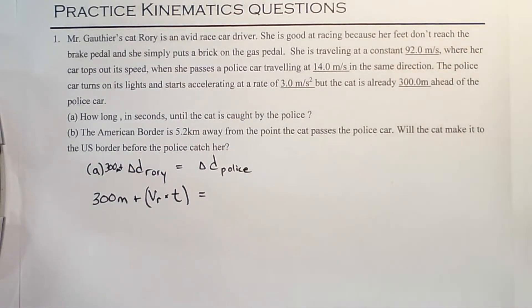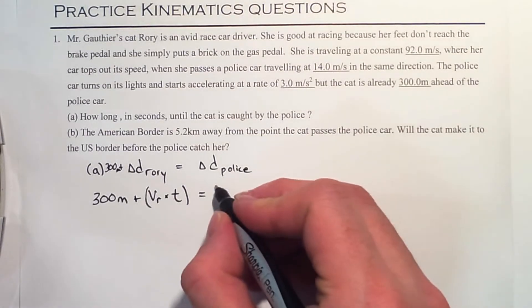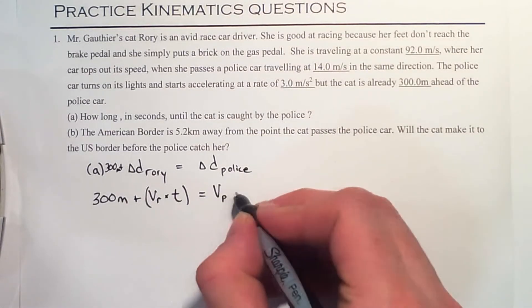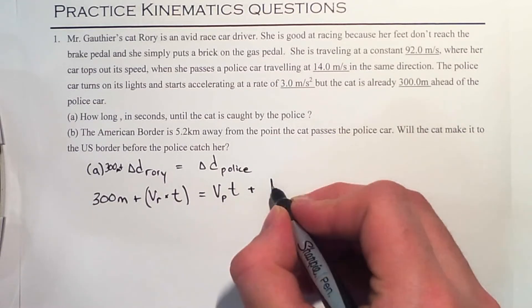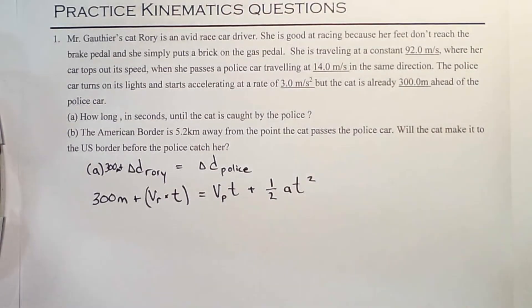The police car, on the other hand, is accelerating. So we have to use one of our equations of motion. And the one that we're going to use is the velocity of the police car times time, plus one-half the acceleration of the police car times time squared.